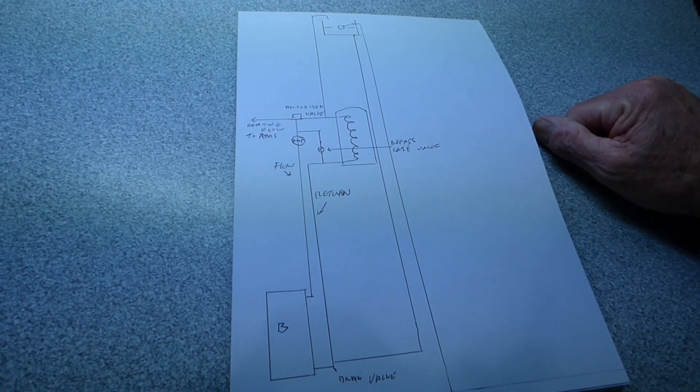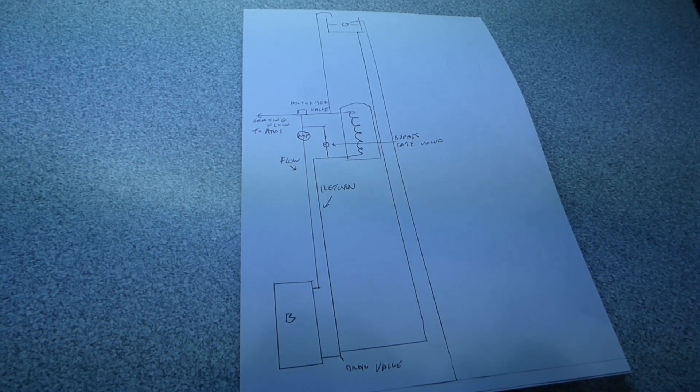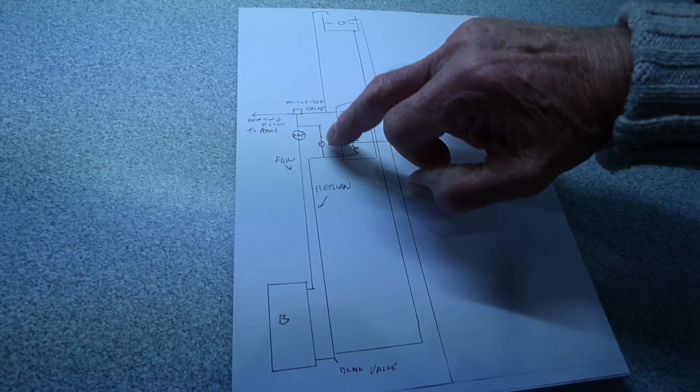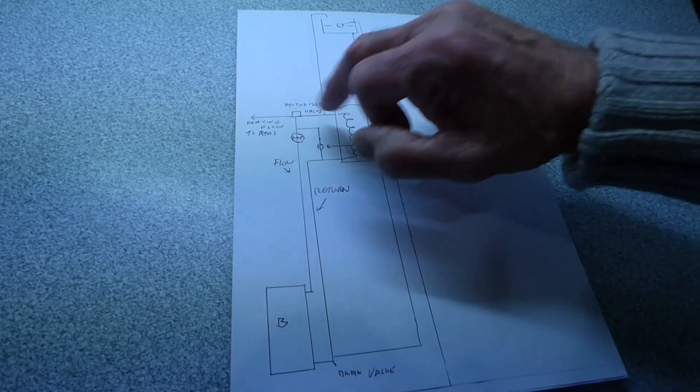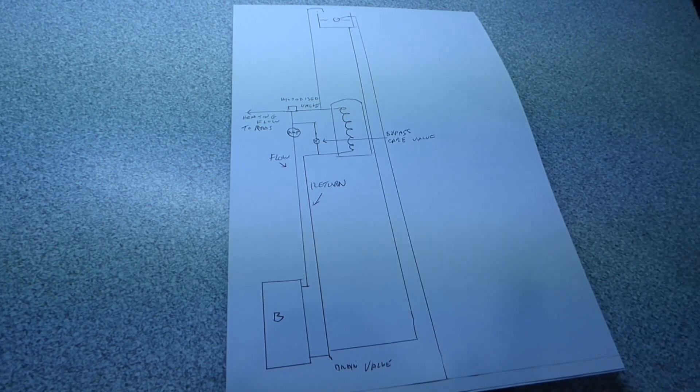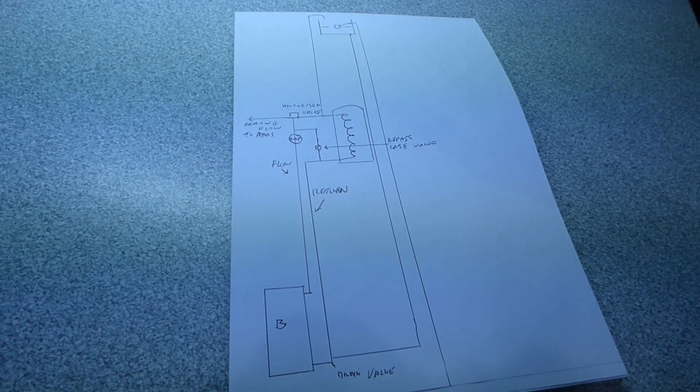So this is what's called a bypass if you've got one of those. Just make sure it's not wide open though because otherwise it would tend to want to go around there and do this instead of going to the radiators. So it's another little tip if you've got one of those in your cupboard. Have a look for that.